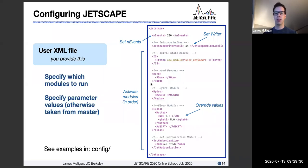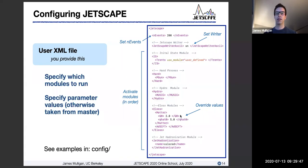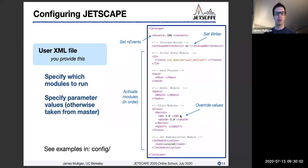By default, if you don't specify a parameter for a particular module, it will use the default value from the master XML file. But if you do specify a value — for example, the Q0 value of two in the energy loss module — that value of two will be used instead of whatever is shown in the master XML file. That's the basic overview of Jetscape configuration, which we'll play with and customize in the hands-on session.